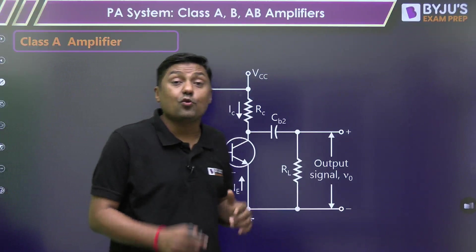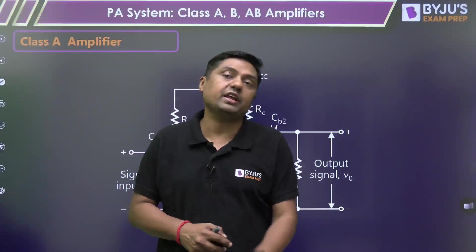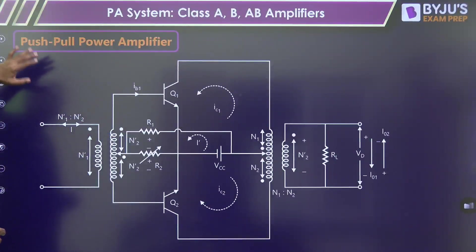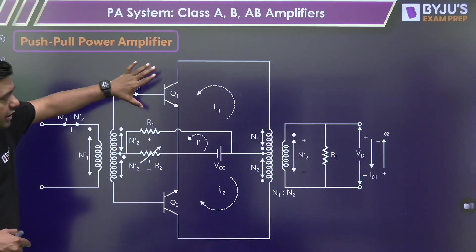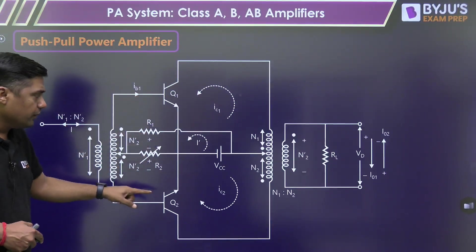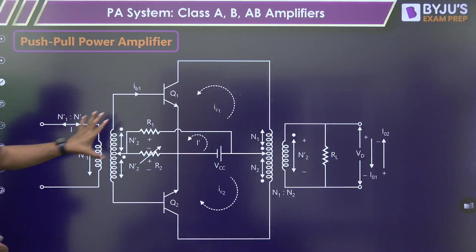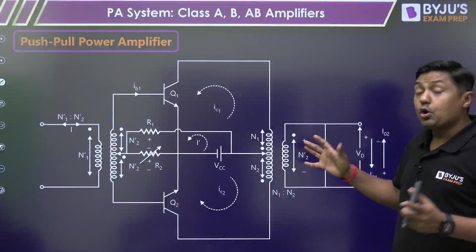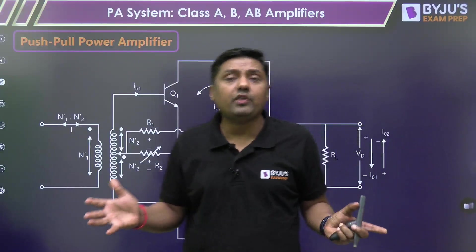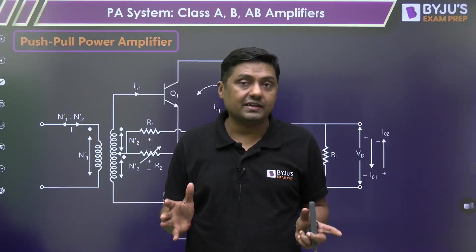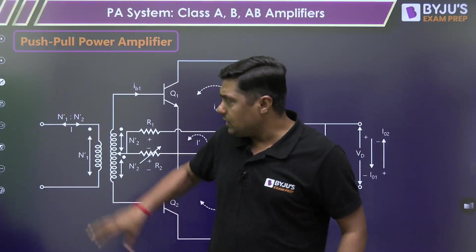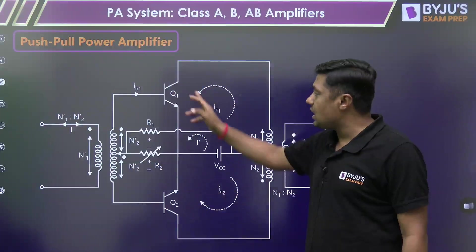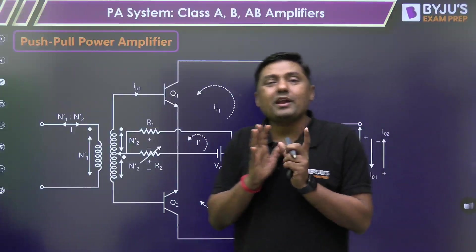Another problem is that class A will consume power even when there is no signal — the transistor consumes more power and that is called the power drain problem. The solution is the class B amplifier, which is a push-pull power amplifier. Here we use two identical transistors Q1 and Q2 with an input transformer and output transformer. Its efficiency is very high at 78.5%. When the signal is absent, both transistors are off and consume no power.